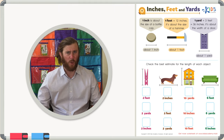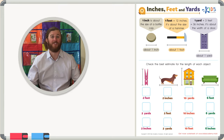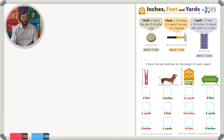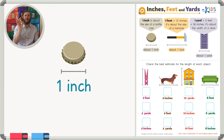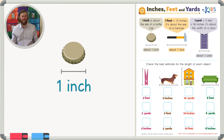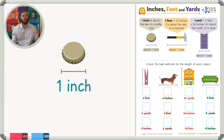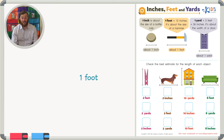Let's go over what some good estimates for different sizes are. First, let's talk about one inch. One inch is the size of a bottle cap — like the kind you pop off the top of a soda. An inch is really, really small. Can you think of some other things in the world around you that are about one inch?